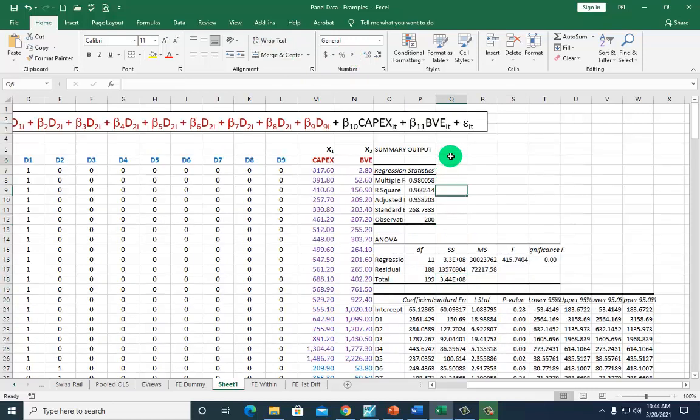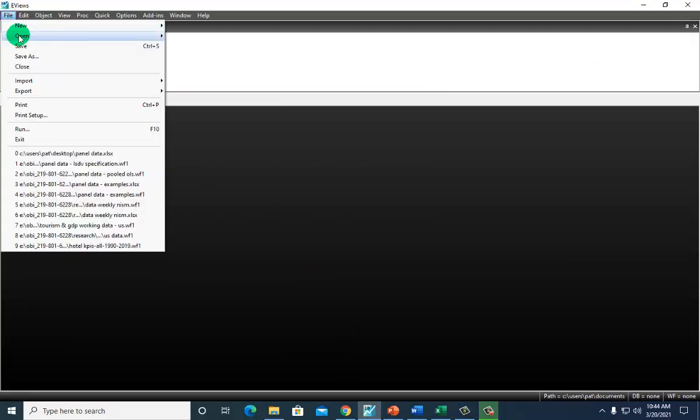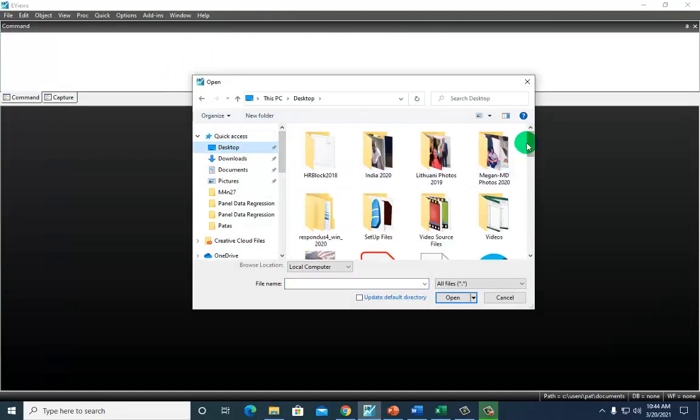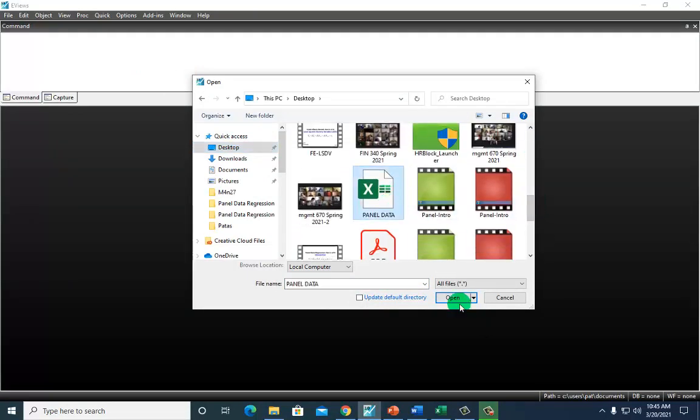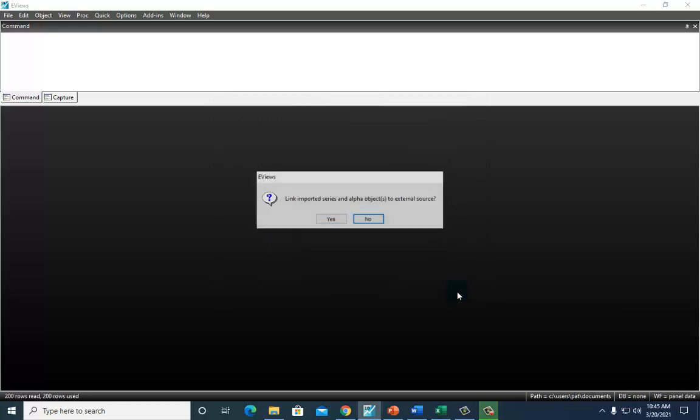So we're going to do the same thing on eViews. So let's get up our eViews right here. But first, we're going to have to import our data. So go here, open foreign data as work file. And let's look for it. I see it right here. Open it. And next, actually just go ahead and click finish. And that'll do it. Click no. And there you have it.